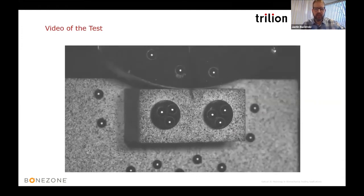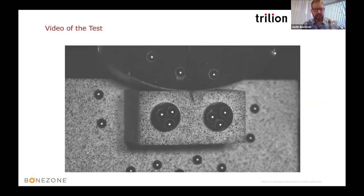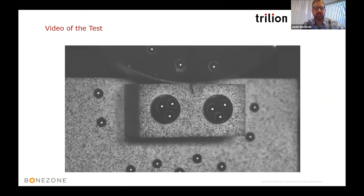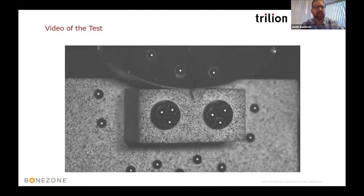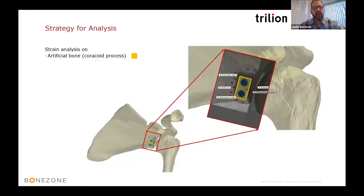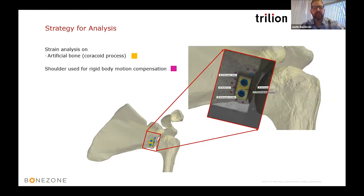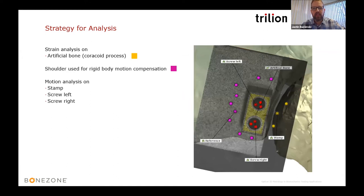We used target dots on the screws for displacement information and speckle patterning on the bone for strain analysis. Cyclic loading on the bone segment with two screws continued until ultimate failure. The purple target dots on the shoulder serve as our rigid body motion compensation, removing global motion from our measurement to isolate fixture movement. The red dots are target dots on the screws, and the yellow dots are on the humerus bone that was loading cyclically.